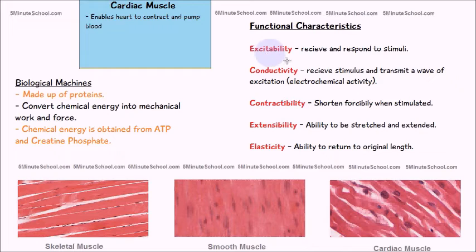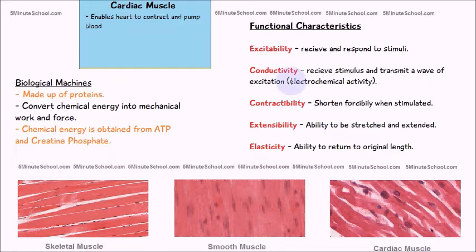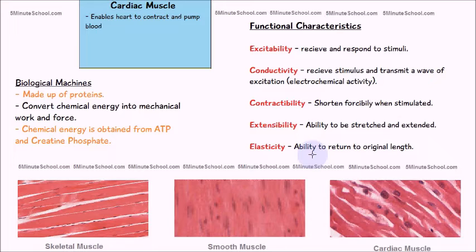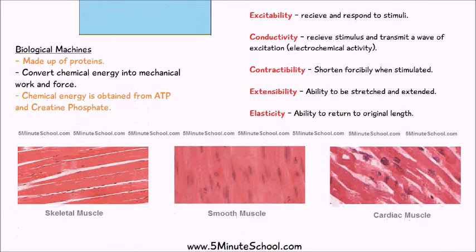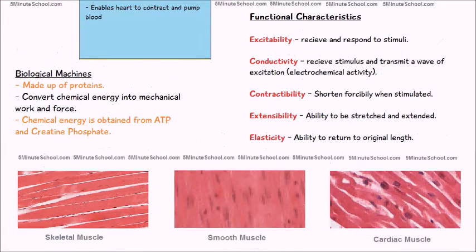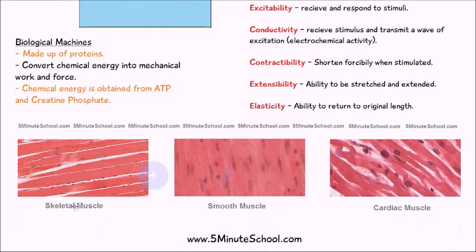Excitability enables the muscle cells to receive and respond to stimuli. Conductivity is where they receive the stimulus and transmit a wave of excitation or electrochemical activity. Contractibility enables the muscle to shorten in length when stimulated. Extensibility is the ability for the muscle to be stretched and extended, and elasticity is the ability to return back to its original length after contraction.